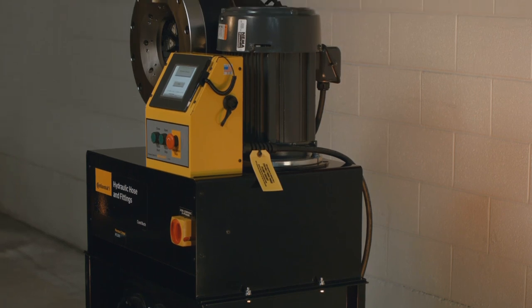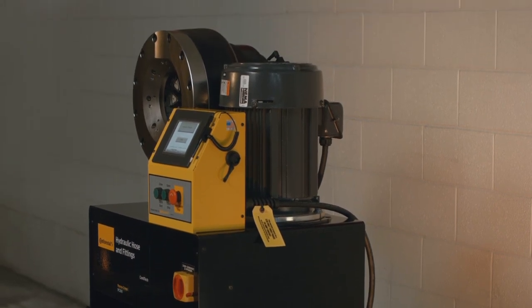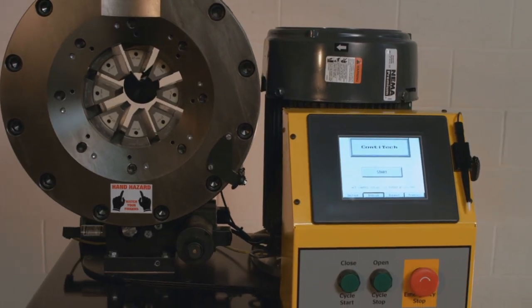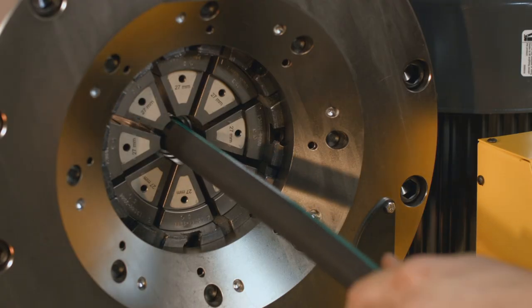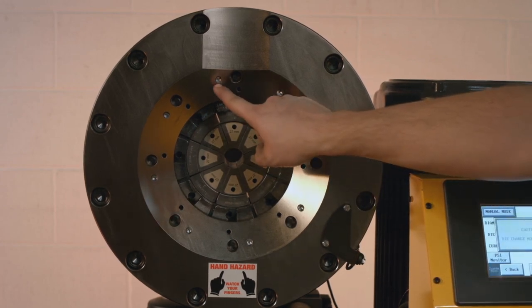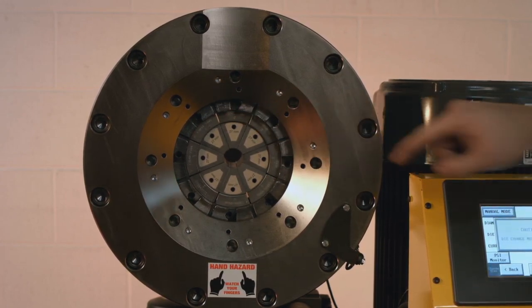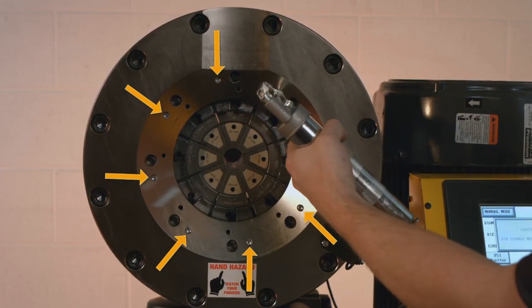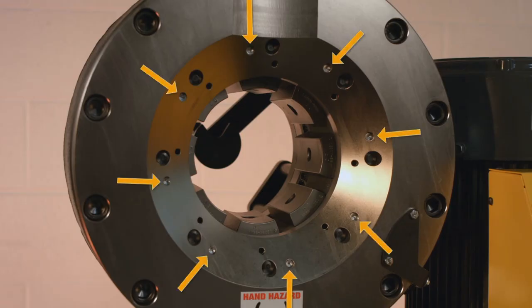The crimper needs to be lubricated every 100 crimp cycles or at the start of each shift if it is used in a production setting. To begin, bring the master dies to the fully closed position and lubricate the die fingers through the 8 lubrication fittings in the front flange face. Then bring the dies to the fully open position and lubricate all 8 fittings again.